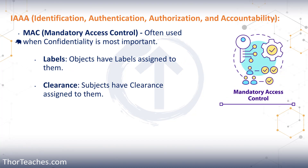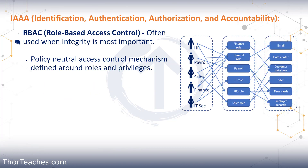Next up, we have MAC, or mandatory access control, and that's very heavily used in the intelligence services and the military. We use this in places where the confidentiality leg of the CIA triad is most important. With MAC, we use least privilege — we give people as little access as possible to do their day-to-day jobs. If they need to do anything outside of that, we grant them more rights. This is a highly secure environment: we give them exactly enough access, no more, no less.